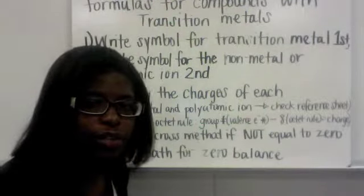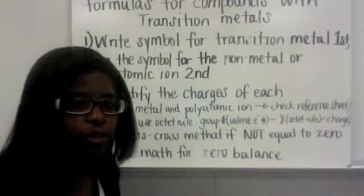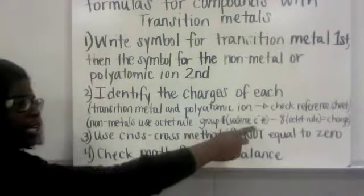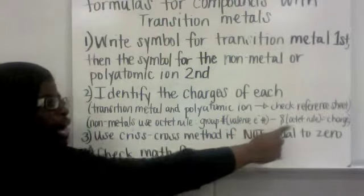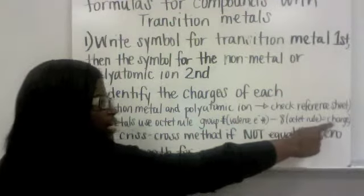Remember for groups 13 through 18 you have to take their group number, remove the one. That gives you the amount of valence electrons. Then you use the octet rule. You subtract 8 and that gives you your charge.